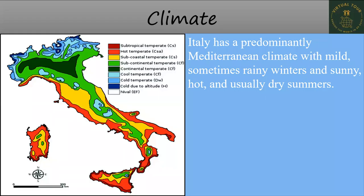Now talking about the climate: here it is represented through a map. Italy has different types of temperate climate. The region highlighted in dark blue has glow-cold climate due to altitude.